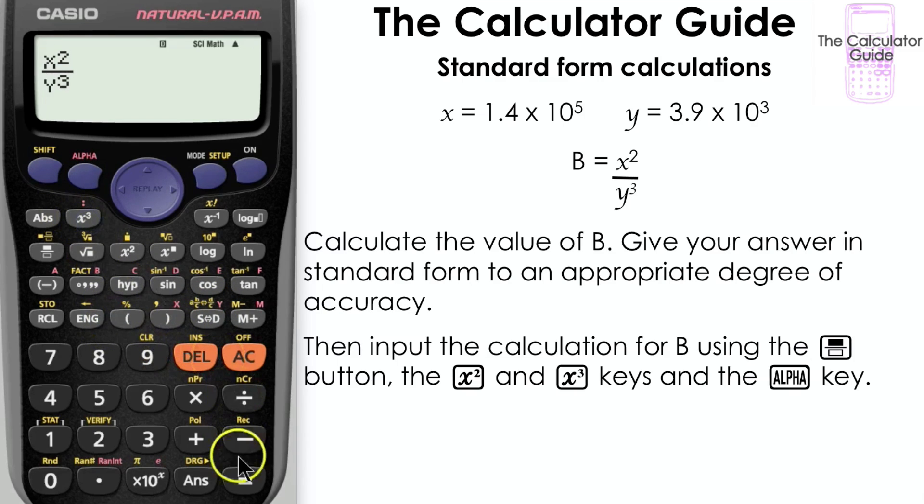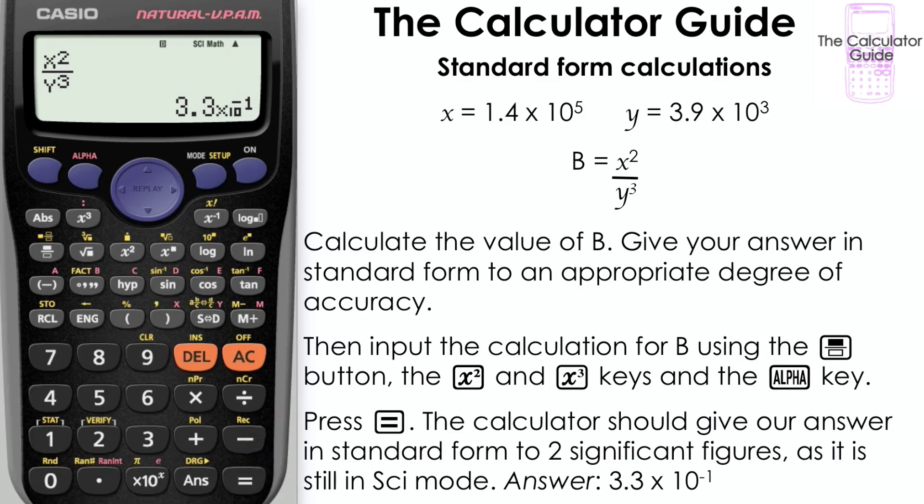Press equals, and then the calculator should give our answer in standard form to two significant figures, as it's still in science mode from part a. And here's our answer, 3.3 times 10 to the power of minus 1.